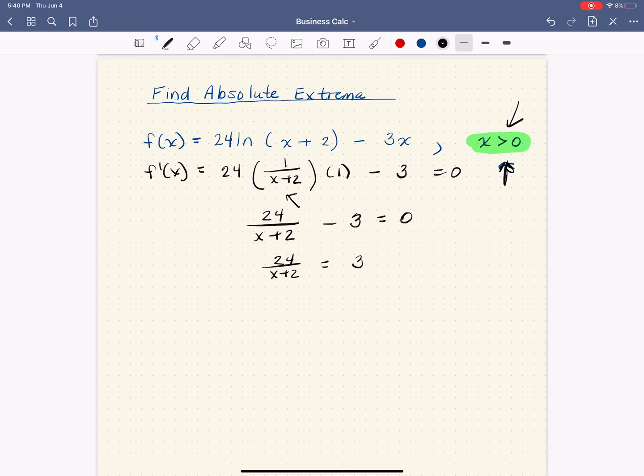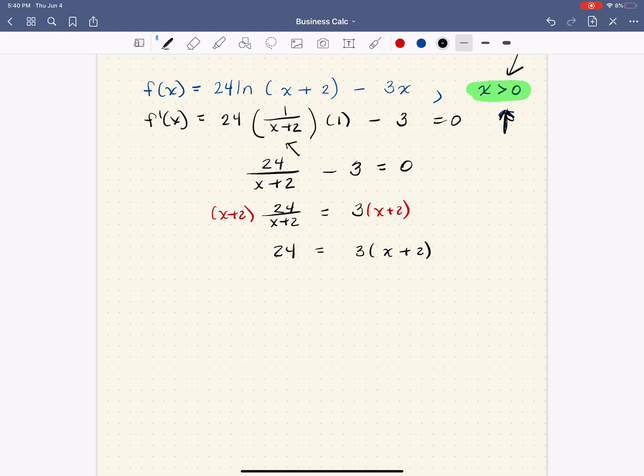So our new line is going to be 24 equals 3 times x plus 2. Now here what you could do is you could distribute the 3 on the right-hand side, or I just noticed that I could probably easily divide by 3, so I'm going to do that, just take advantage of the numbers there.